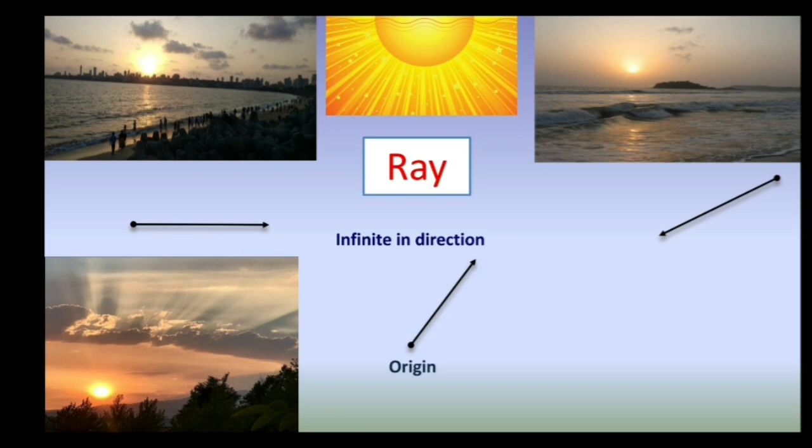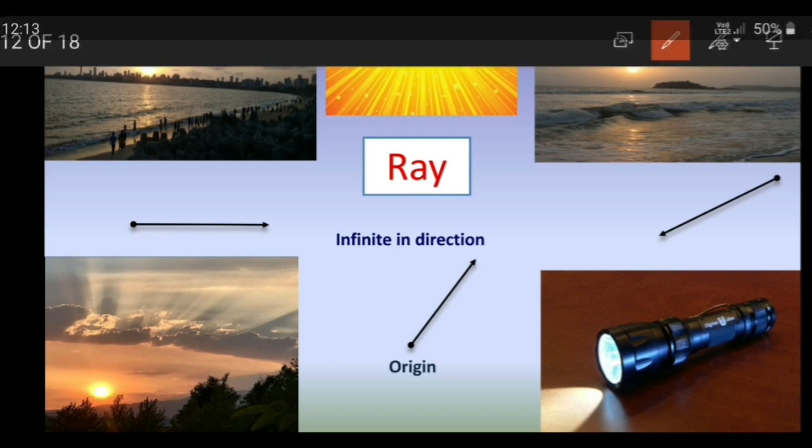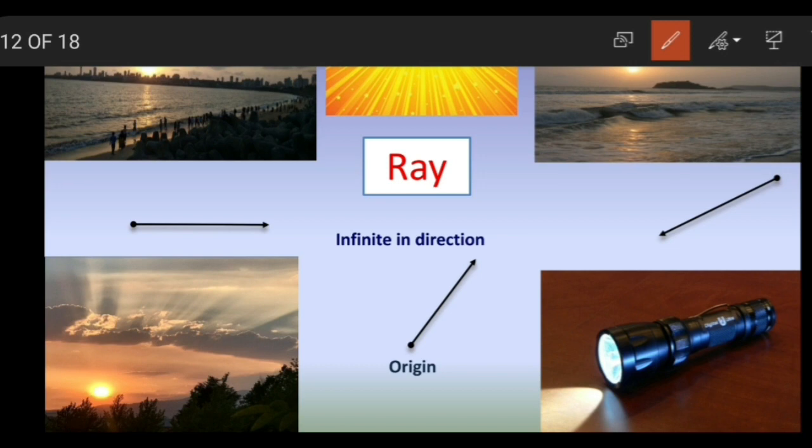Sun rays move to every planet including our planet Earth, and many of its rays actually move along unendingly. Now what is the common point between all these rays that are coming out from the sun? They are all coming from a fixed point and then they just extend unendingly. So that is a property of ray: it starts from a fixed point and extends unendingly.